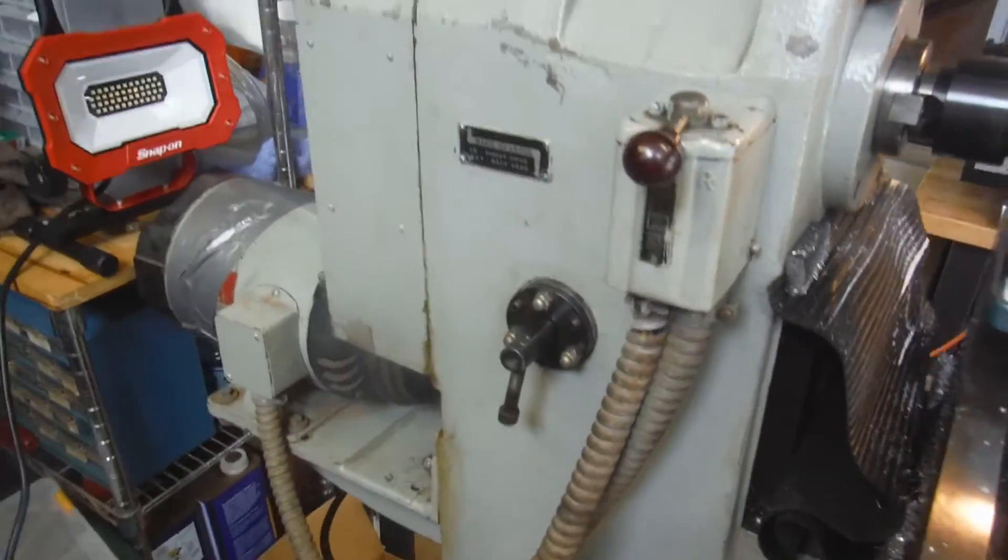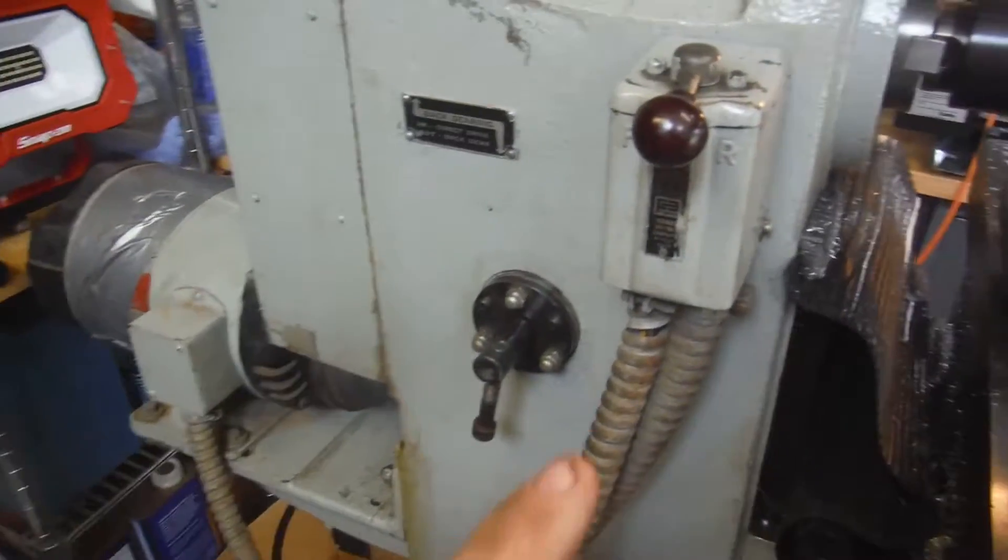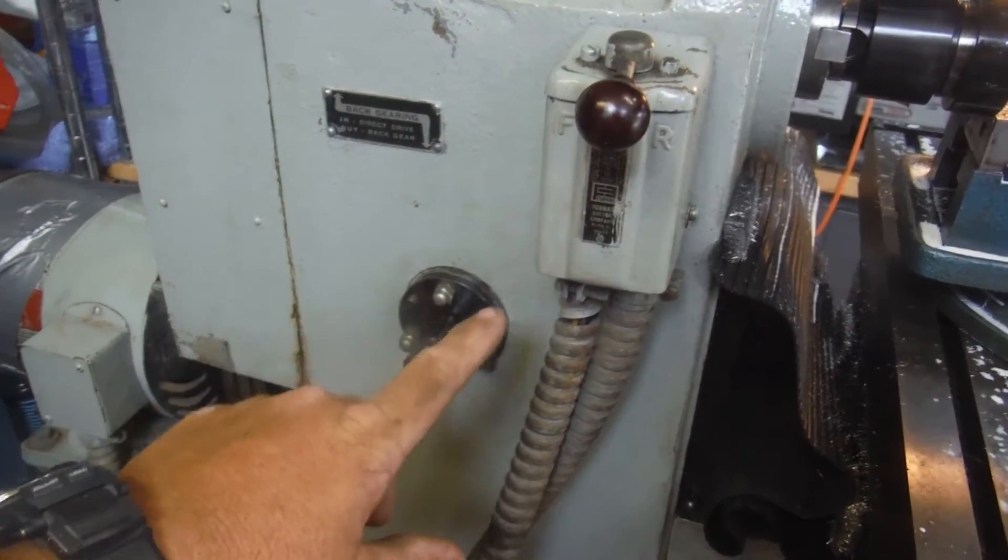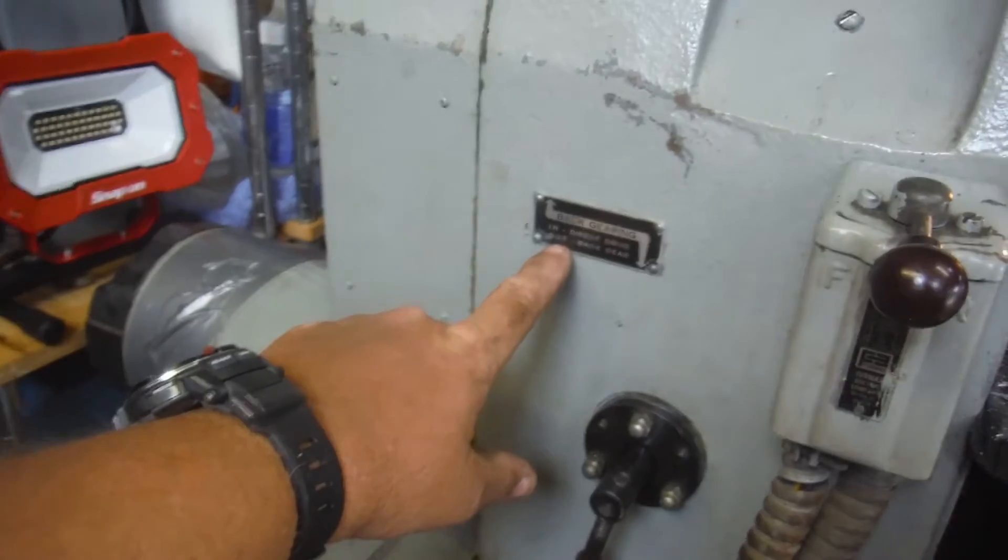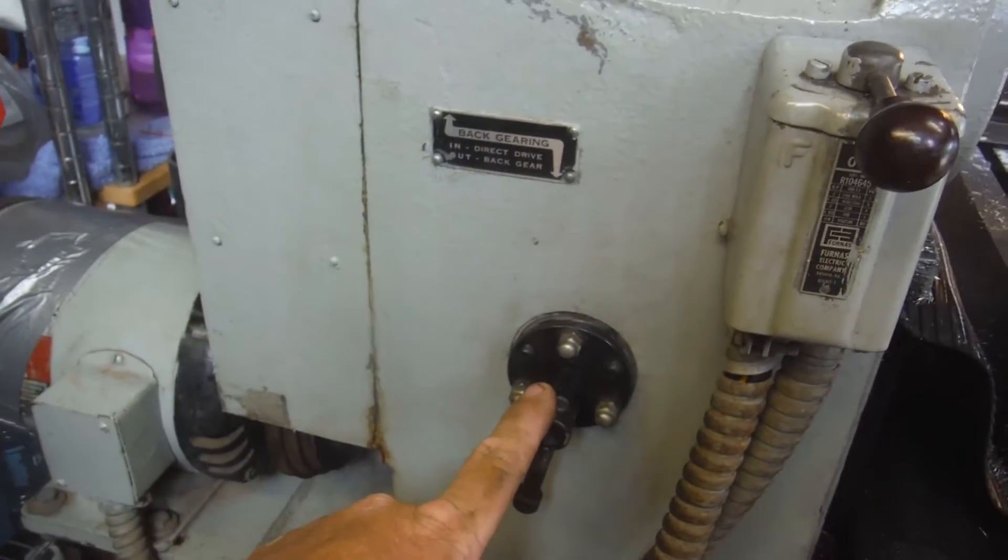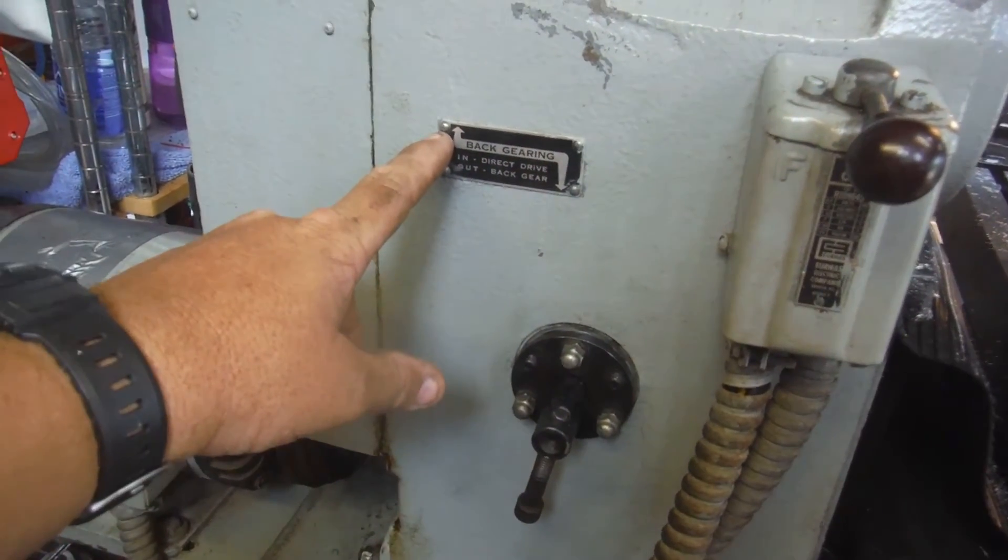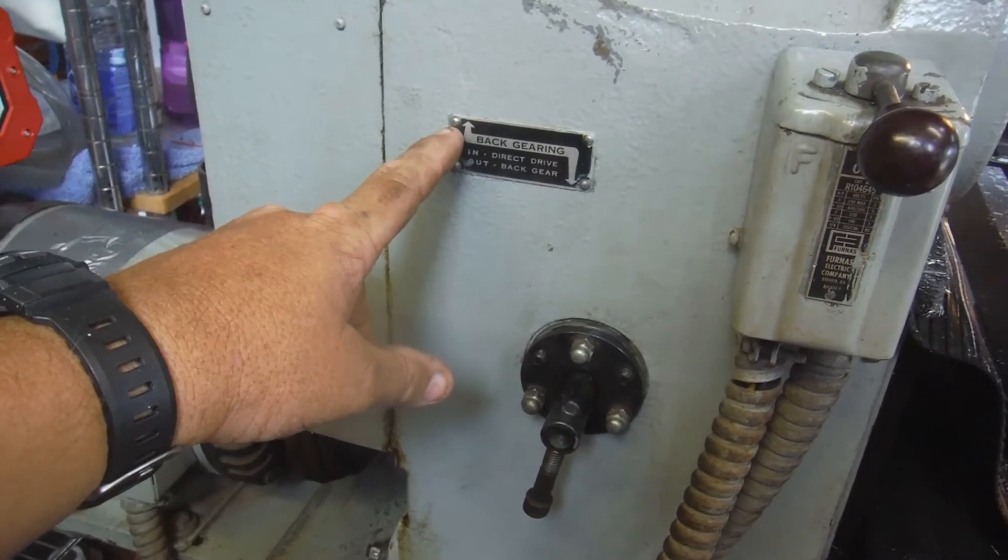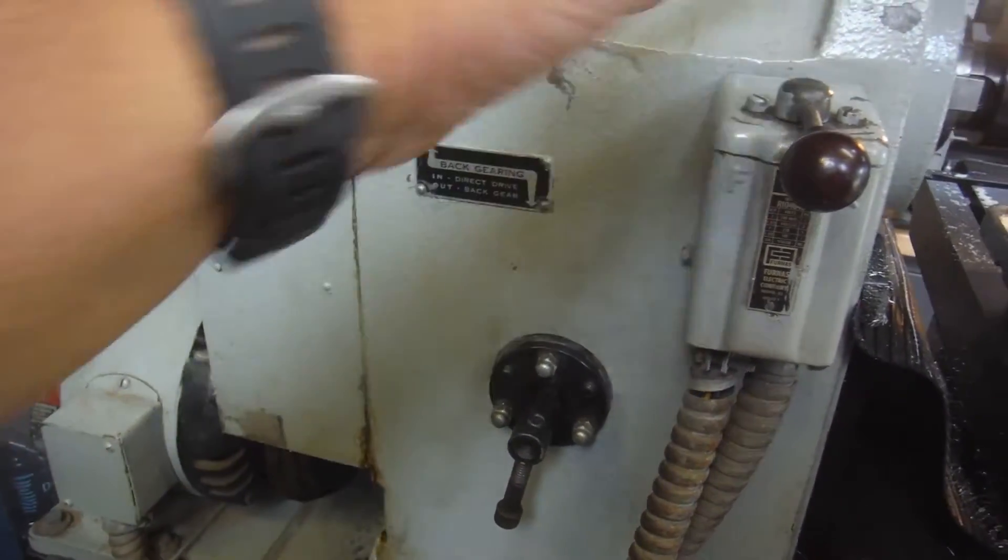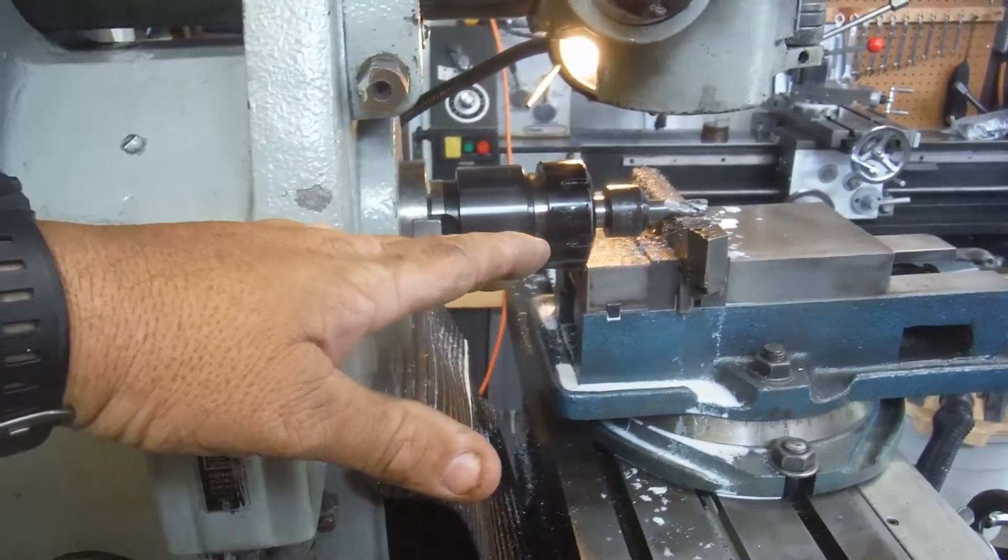In order to get the back gears to work, you come over here on the side next to the power switch here, and you'll see a sign that says if you push this lever in you're in direct drive, direct from the belt to the spindle to the turning tool.